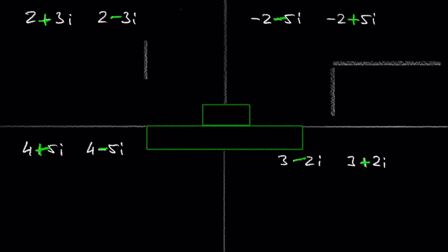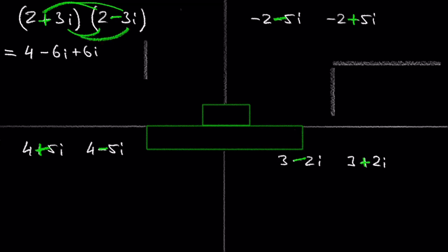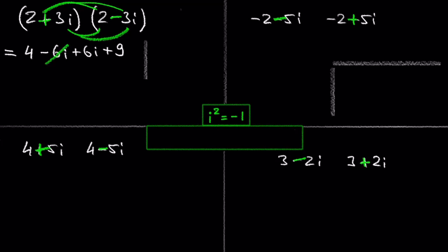In the next step I'll show you that when we multiply 2 plus 3i by its conjugate 2 minus 3i, the result will become a real number. With the FOIL method we get 2 times 2 is 4, 2 times negative 3i is negative 6i, 3i times 2 is 6i, and 3i times negative 3i is positive 9. Negative 6i and positive 6i cancel each other out, and 4 plus 9 is 13, which is a real number.